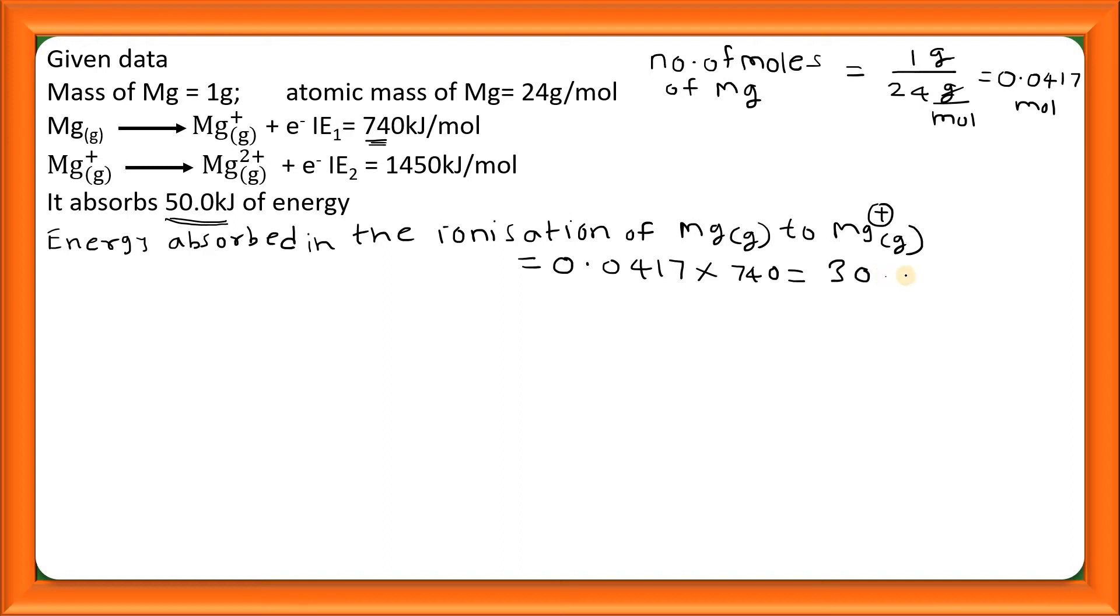Total उसने 50 kilojoules absorb किया. 50 में से 30.86 kilojoules use हुआ Mg⁰ से Mg⁺ जाने में. जो remaining energy है वो use होगा Mg⁺ से Mg²⁺ जाने में.